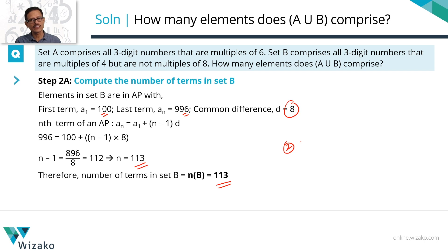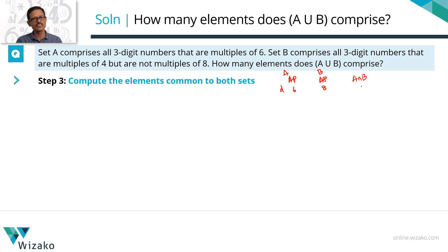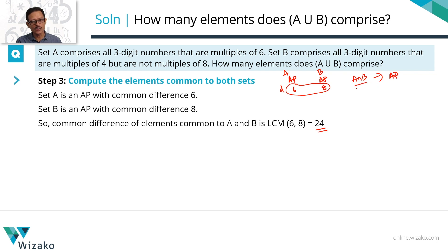Step 3: finding elements common to both sets. Set A is an AP with common difference 6; Set B is an AP with common difference 8. The elements common to both will also form an AP, and the common difference of that AP will be the LCM of 6 and 8, which equals 24. Let's verify there are such common terms.